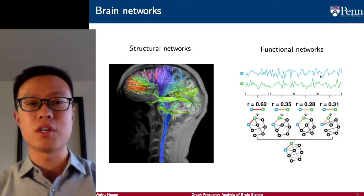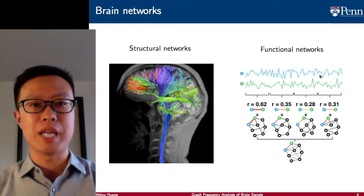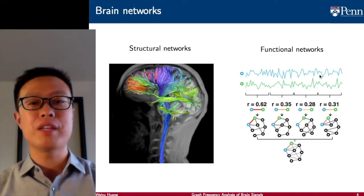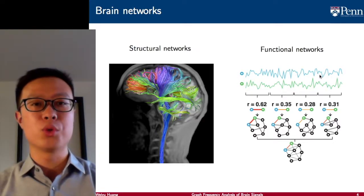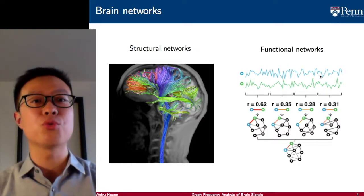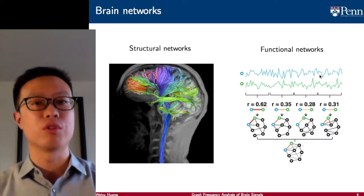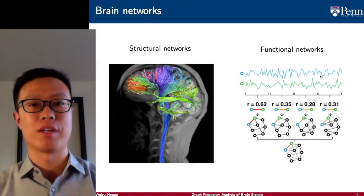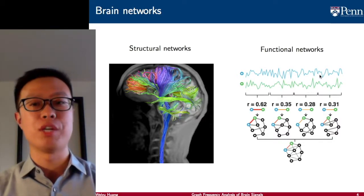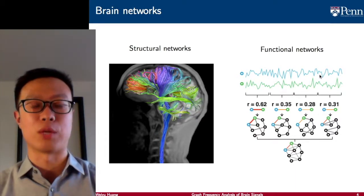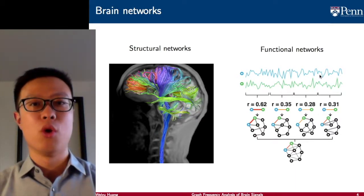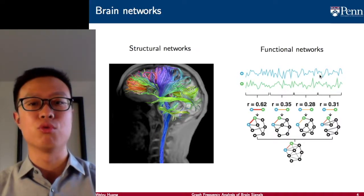If the brain regions serve as the nodes, what would be the edges? There are two main techniques for that: structural or functional. In structural networks, we use imaging techniques such as diffusion MRI, which traces the bouncing of water molecules inside our brain. This bouncing of water molecules can be considered as highways where information is passed. Alternatively, we can consider a functional network, where for a pair of brain regions, we examine the similarity of the activities for these two brain regions.